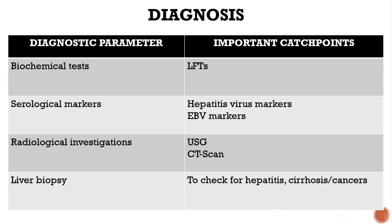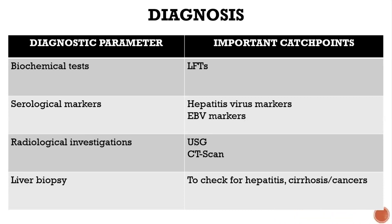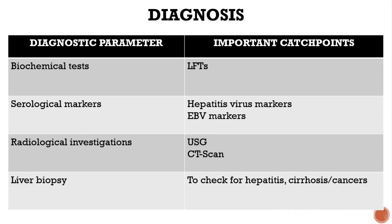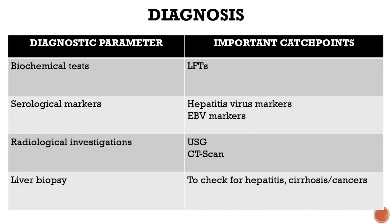So if we talk about diagnosis, we can do biochemical tests. Biochemical tests include liver function tests. We can look into bilirubin levels, SGBT, SGOT, gamma-glutaryl transferase, etc.